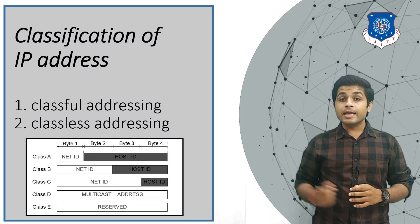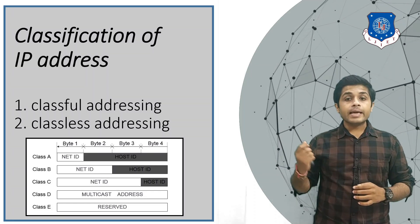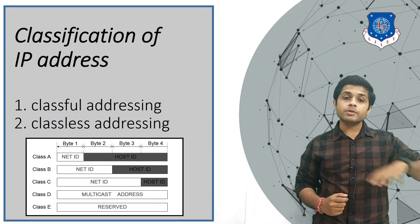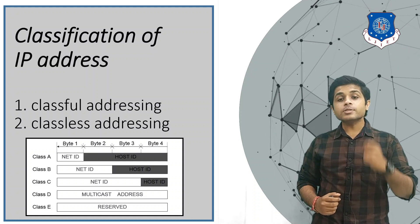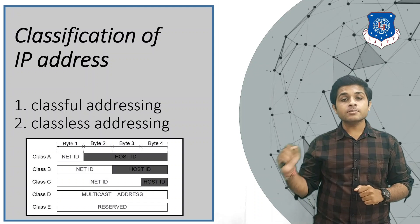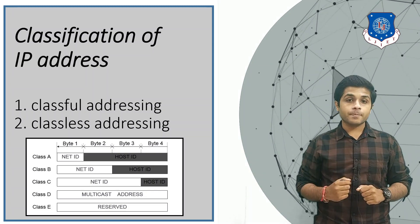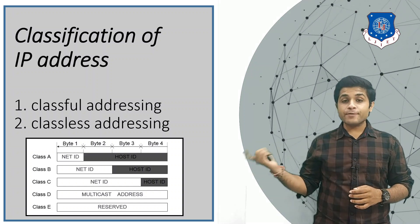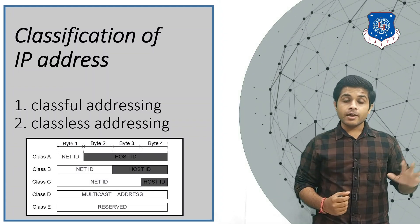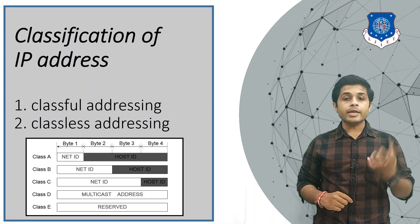In Class B, the first two bytes — 16 bits — are for the network ID and the remaining 16 bits are for the host ID. So in Class B, 2 to the power 16 individual networks are possible and in one network 2 to the power 16 hosts are possible. In Class C, the first 24 bits are for the network, meaning 2 to the power 24 individual networks are possible, and in one network 2 to the power 8 hosts are possible.